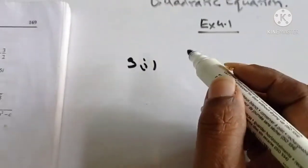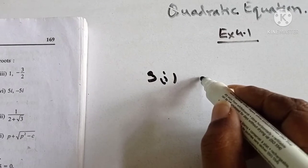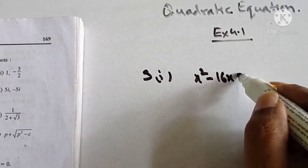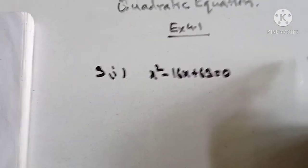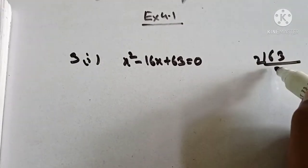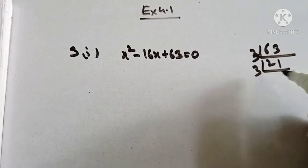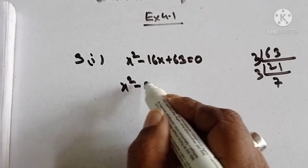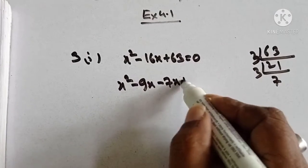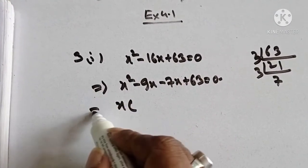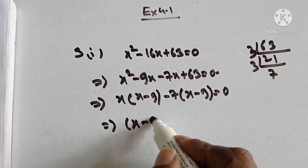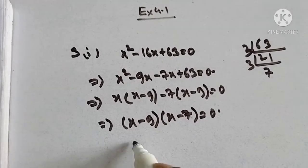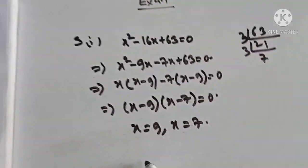First, I am going to find the roots of this equation. I will factorize x squared minus 16x plus 63 equal to 0. Factoring 63: 9 times 7, so this becomes x squared minus 9x minus 7x plus 63 equal to 0, giving x(x minus 9) minus 7(x minus 9) equals 0, therefore (x minus 9)(x minus 7) equal to 0. So x is equal to 9 and x is equal to 7 — these are the two roots.